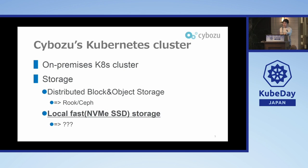Cybos has a Kubernetes cluster — an on-premise Kubernetes cluster in our data center. It's under development, but we will use this cluster to host our service in two or three years. In this cluster, we also have a storage system. We have two kinds of storage: the first is distributed block and object storage, and the second is local fast storage, specifically local NVMe SSD storage. At the beginning of our development, we needed to select the best storage driver for local fast storage.